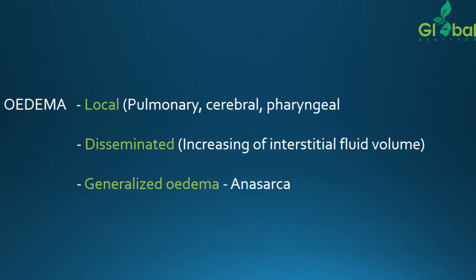Edema can also be classified as local edema, disseminated edema, and generalized edema. Local edema examples include pulmonary edema, cerebral edema, and pharyngeal edema — it is located in only one area. Disseminated edema, however, spreads from a local area to other adjacent regions, not specifically confined to one space.